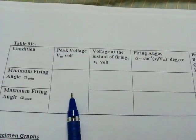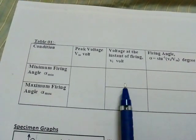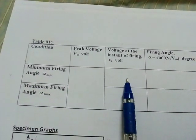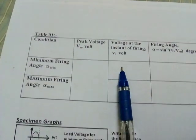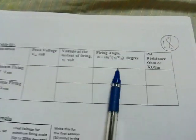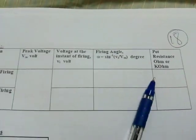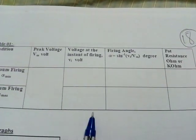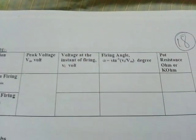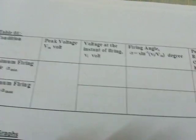And this is the peak value means the maximum value. This is the voltage at alpha minimum. This is the voltage at alpha maximum. These are the formulae and these are the pot resistances at respective incidents, that is at alpha minimum and alpha maximum respectively.